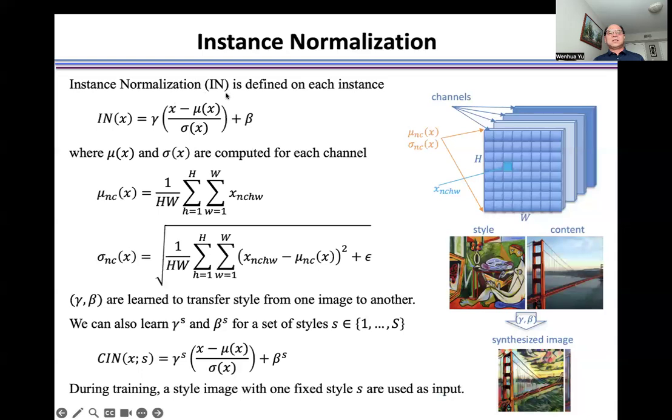Instance Normalization is defined on each instance in this formulation, where mu (μ) and sigma (σ) are computed for each channel using these formulations.